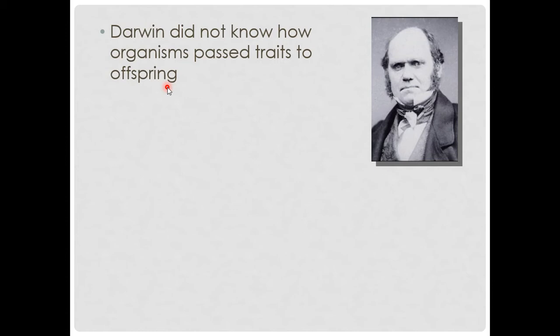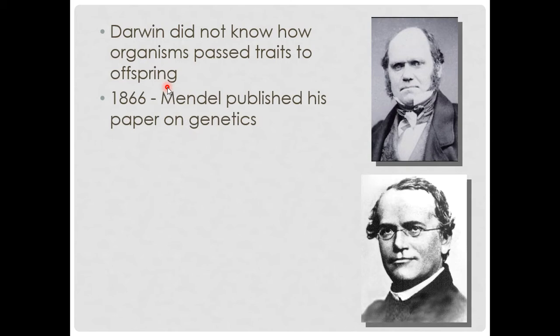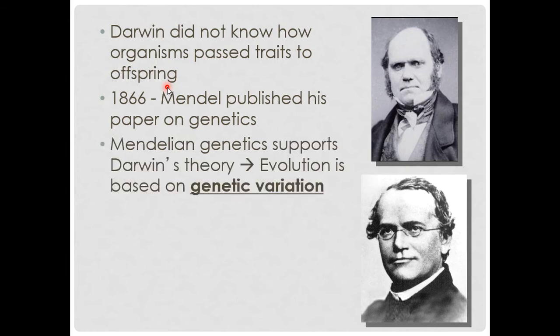Darwin didn't know how organisms pass traits to their offspring, because it wasn't until Mendel published his paper on genetics in 1866 that we even knew genetics was a thing. Darwin noticed trends in the data but had no idea how traits were passed down. Everybody knew traits were inherited — you can see familial resemblances — but there was no mechanism. After Mendel came along and explained how traits are held on chromosomes and passed down, that further cemented Darwin's ideas and supported evolution by natural selection, because it hinged on genetic variation.